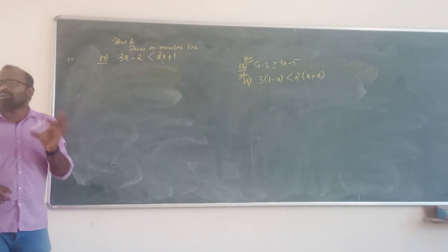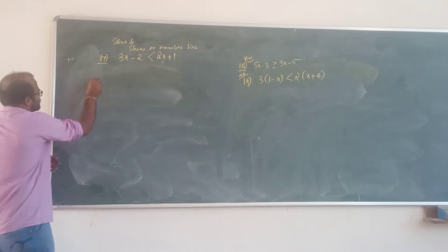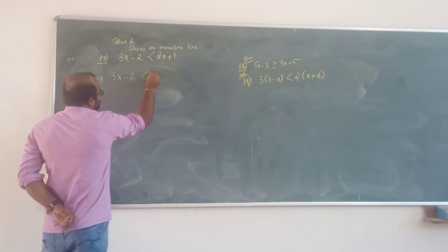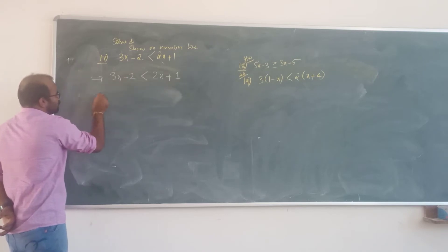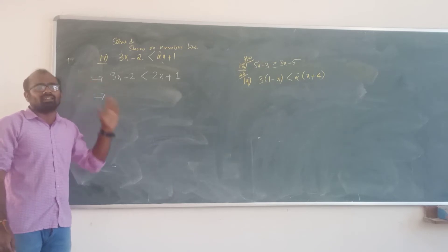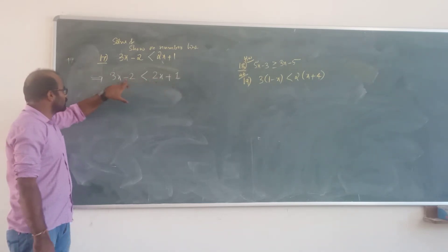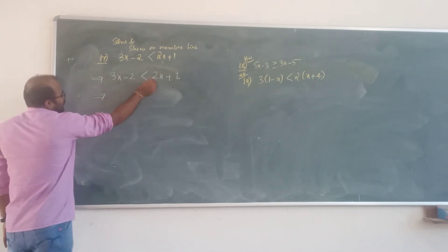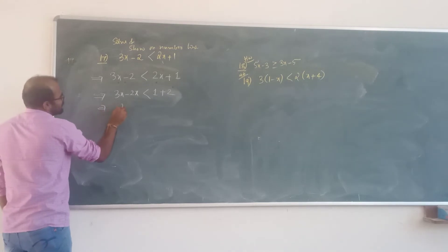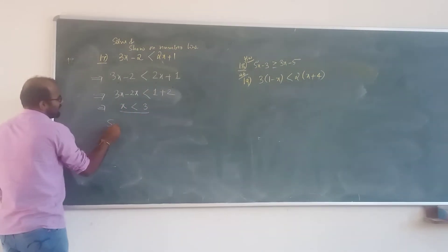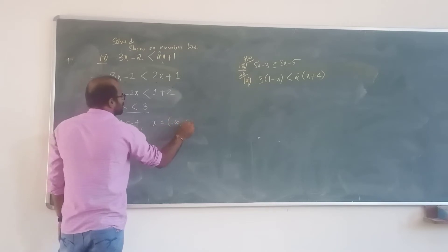3x minus 2 is less than 2x plus 1. Similar problem — method is the same, but only one step extra: you have to show it on the number line. 3x minus 2x less than plus 1 plus 2. 3x minus 2x is x. x less than 3. Solution set: x is equal to minus infinity to 3.